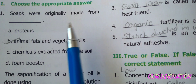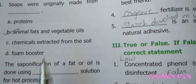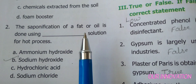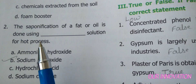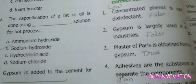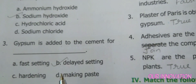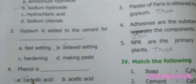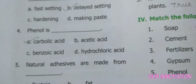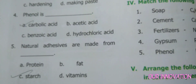Question 1: Soaps were originally made from animal fats and vegetable oils. Question 2: The saponification of a fat or oil is done using sodium hydroxide solution. Question 3 (from segment 7): Gypsum is added to the cement for delayed setting. Question 4: Phenol is carbolic acid. Question 5: Natural adhesives are made from starch.